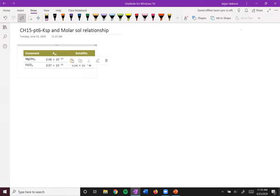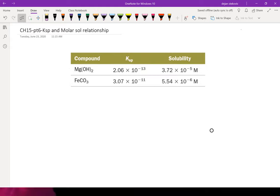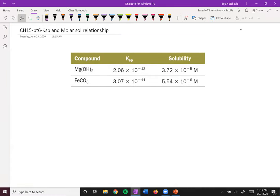Let's take a look at the relationship between KSP and molar solubility and see if we can skip some steps and say some things about the compounds. You'll see sometimes we can, sometimes we can't. So let's compare these two examples, magnesium hydroxide and iron carbonate.